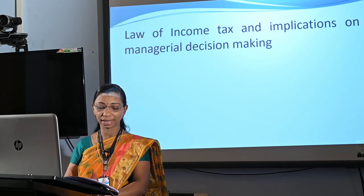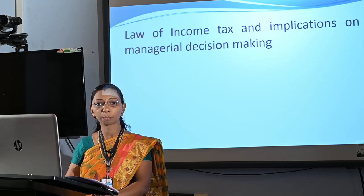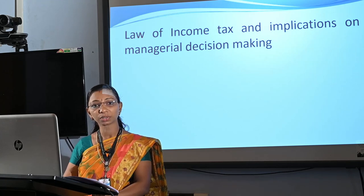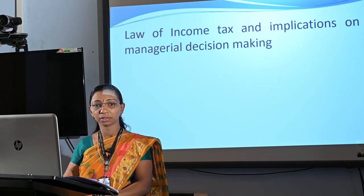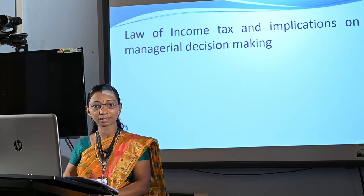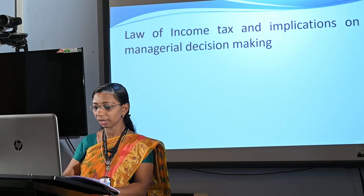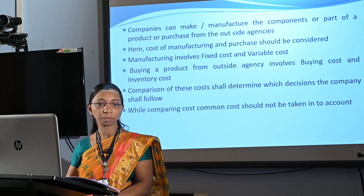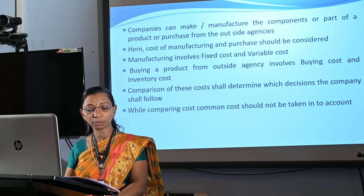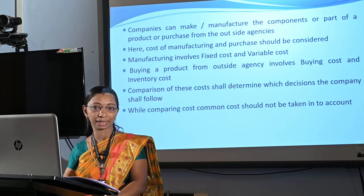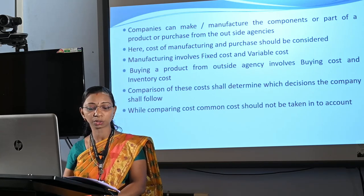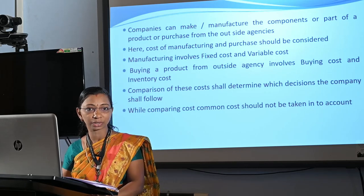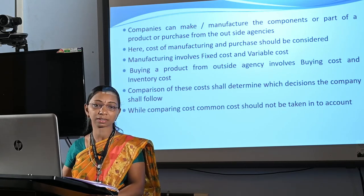It is quite natural that every component or part of a product cannot be produced by the company itself. Manufacturing involves various types of cost, then energy, expertise, technology etc. Here, the company can opt for two types of decision: one is to manufacture the component by the company itself, and the other one is to purchase it from some outside agencies. Here, cost of manufacturing and cost of purchase should be considered.